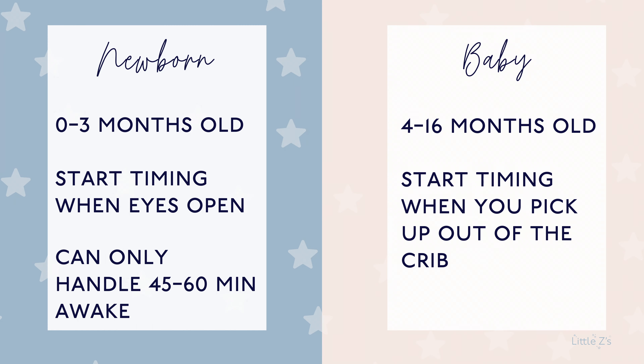So let's conclude: when are you supposed to put your baby down for a nap? For a newborn, they can only handle 45 to 60 minutes of being awake, and that starts when they open their eyes in the morning or after a nap — that's when you start your clock. For a baby who is four to 16 months and beyond, you start their awake window from when you get them out of the crib. That's when you start the timer for when their next nap begins.